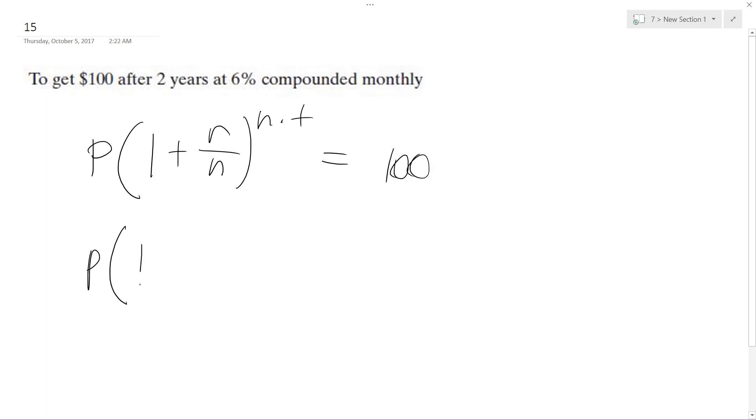So our principal, we don't know what that is, but it's going to be 1 plus rate, which is 0.06, divided by compounded monthly, which is 12. 12 times two years equals 100.